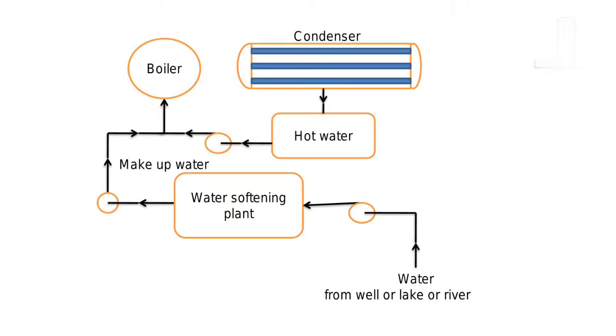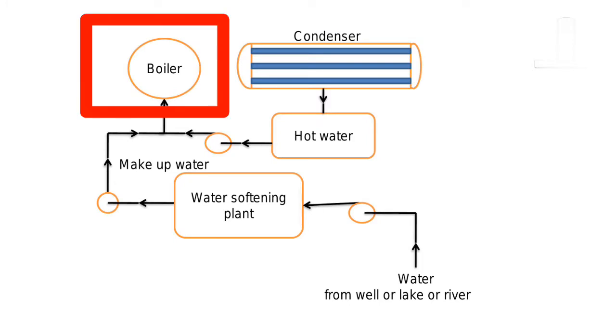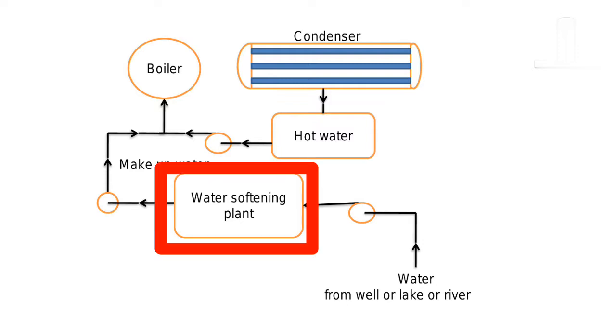The main important components are condenser, boiler, hot water chamber, and water softening plant. The main thing is that we have to supply water to the boiler.